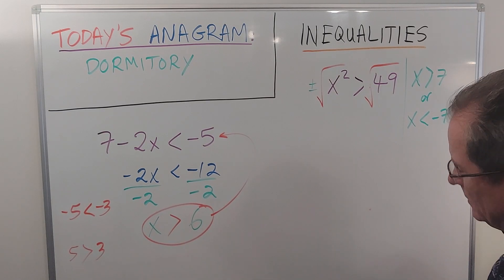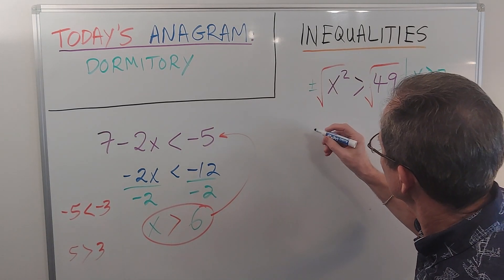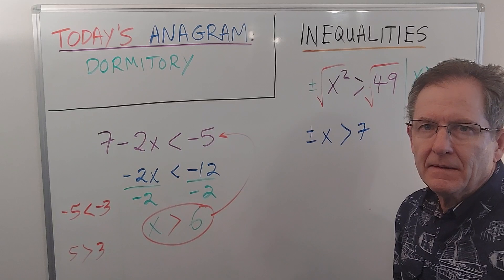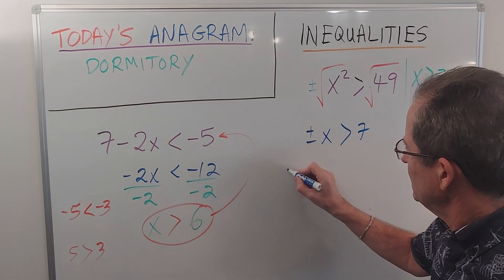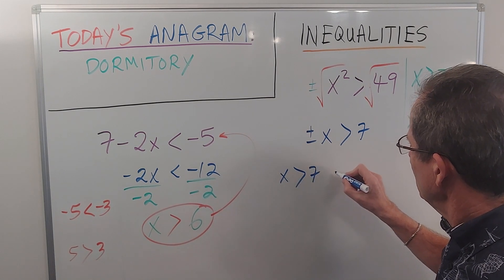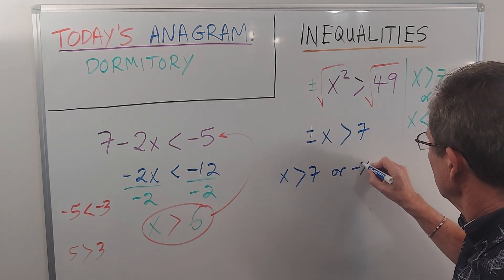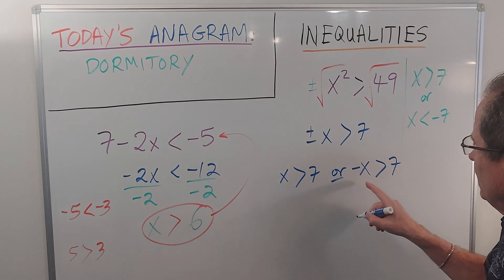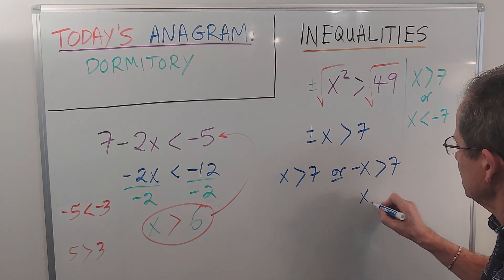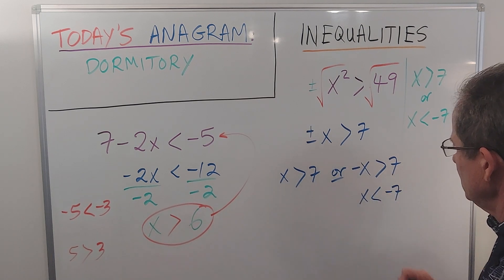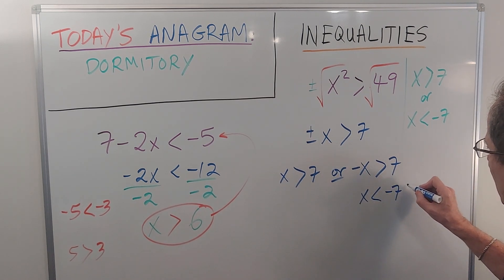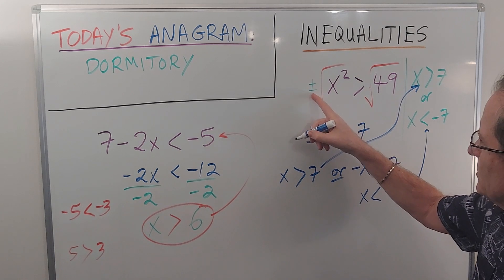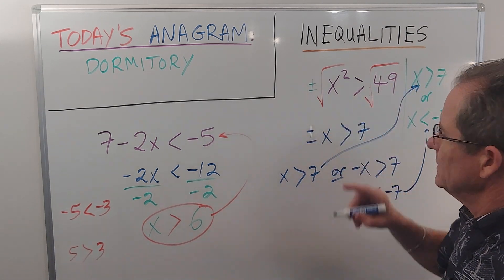So doing that, I get plus or minus x is greater than 7. Is that right? Let's find out. If I break that down into the two statements: x is bigger than 7, or negative x is bigger than 7. So that's complete. If I divide by negative 1 here, I get x and negative 7, but that inequality switches. So sure enough, I get this and this. So putting the plus or minus there gives the right answer. Putting it over here doesn't.